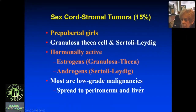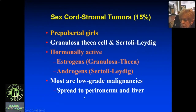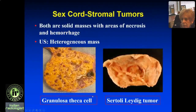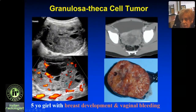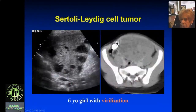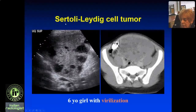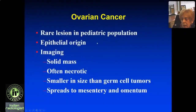Sex cord stromal tumors are another group, and the clue is that they affect prepubertal girls. There are two types: granulosa-theca and Sertoli-Leydig. They're hormonally active — granulosa-theca produces estrogens, Sertoli-Leydig produces androgens. Most are low-grade malignancies that may go to peritoneum and liver. Both are solid, large, with areas of necrosis and hemorrhage, and they're heterogeneous. Example: a 5-year-old girl with breast development — hormonally active — ovarian mass with flow on CT: precocious puberty, sex cord stromal tumor, granulosa-theca. A 6-year-old with virilization and a big pelvic mass: Sertoli-Leydig, even before surgery.